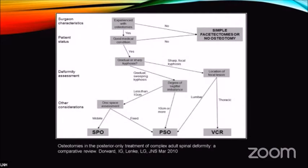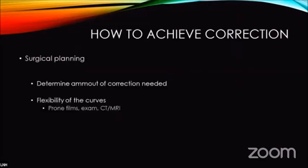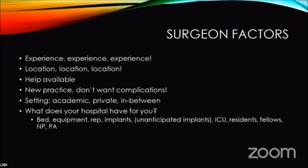A simple paradigm to follow: first, you need to operate in a center experienced with these complex surgeries. If the patient is not medically fit or the experience is lacking, stick with simple laminectomy or fix them in situ. If you have a good patient and good experience, decide whether the curve is sharp or gradual. A gradual curve can be managed with multi-level facetectomies or SPOs, while a sharp wedge or acute angle requiring correction calls for vertebral column resection or PSO. For surgical planning, determine the amount of correction needed and the flexibility of the curve using prone and flexion-extension films, CT, and MRI. Surgical factors — experience, location, available services, and equipment — are most important.